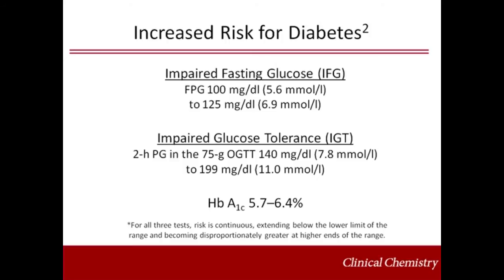In 2003, an ADA expert committee report reduced the lower fasting plasma glucose cut point to define impaired fasting glucose from 110 milligrams per deciliter to 100 milligrams per deciliter. However, the WHO and many other diabetes organizations did not adopt this change. Compared to the fasting glucose cut point of 100 milligrams per deciliter, a hemoglobin A1C cut point of 5.7 percent is less sensitive but more specific and has a higher positive predictive value to identify people at risk for later development of diabetes.